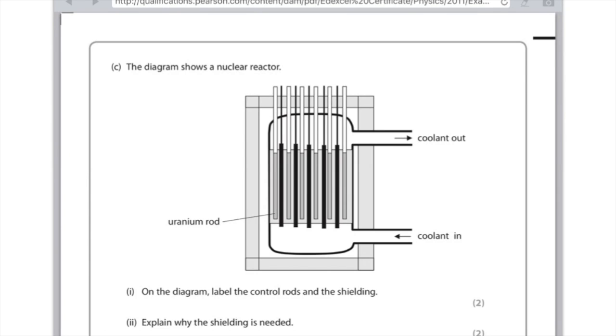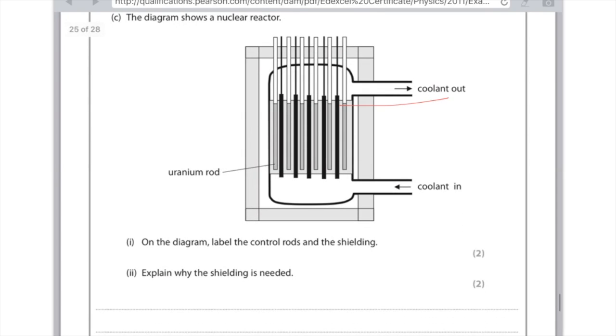C, the diagram shows a nuclear reactor. On the diagram, label the control rods and the shielding. Okay, so the black things hanging down here are the control rods and the shielding is the box on the outside which prevents excess radiation getting out. Explain why shielding is needed. You need to talk about the fact here that the reactor material or the waste is radioactive and then for the second mark, that can lead to cancer which is very dangerous. So that's why you obviously need to shield it and keep it away from people. And the reason why you do need shielding is because, remember, that radiation is very penetrating. It will pass through a huge amount of air, so you do need that concrete box around it to prevent it getting out.